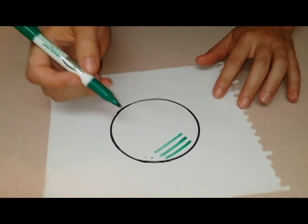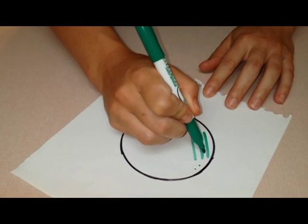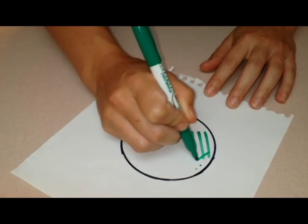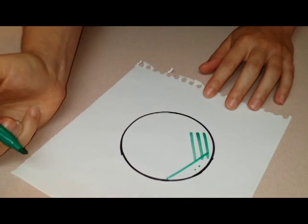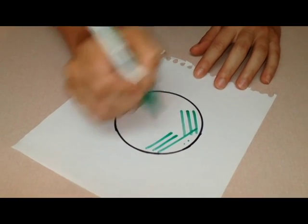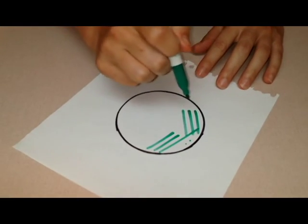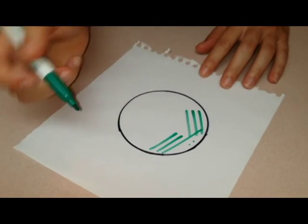Touch it to the agar so that it hisses. And then you streak through those lines and then do two more without touching your previous. This is a way of sort of diluting your culture.